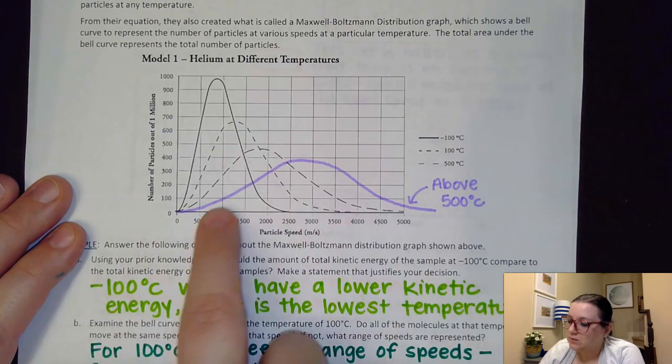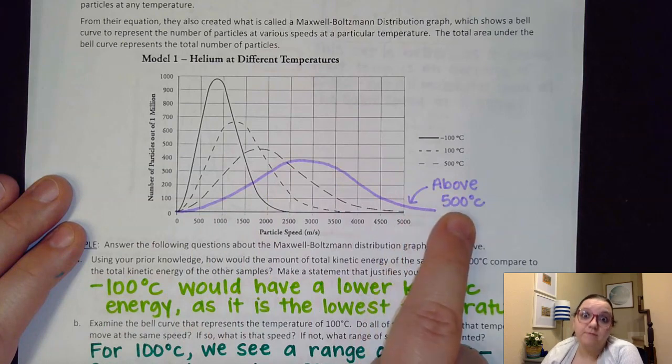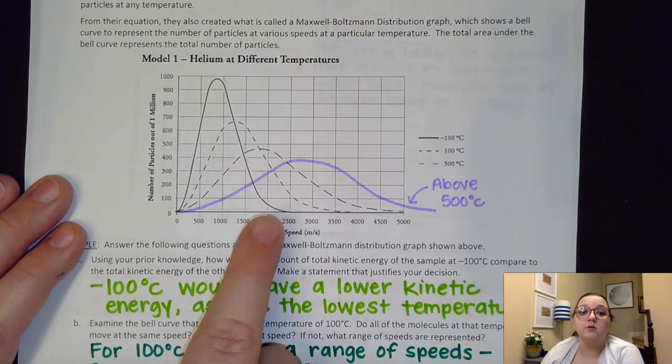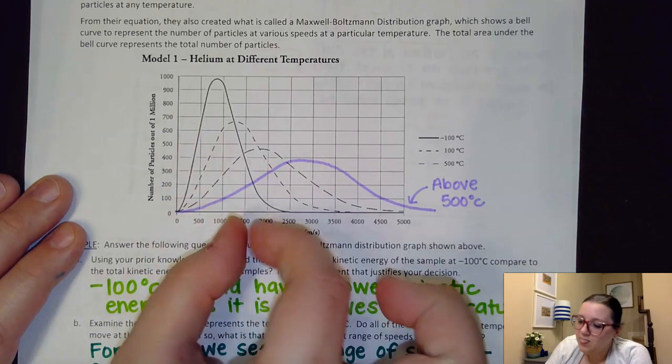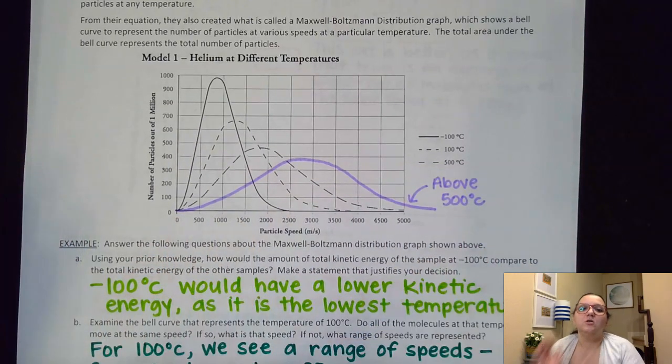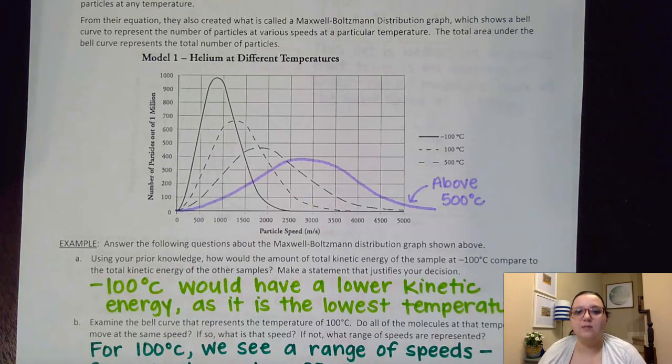And so this was my curve I drew from above 500 degrees Celsius. Again my peak of this should be shifted to the right at an increased particle speed of the rest of these and that range of speeds should be increased. So here's the key thing I want us to take away from this.